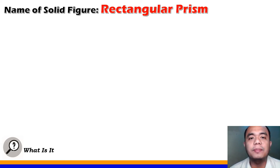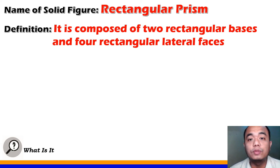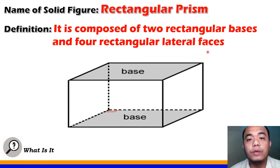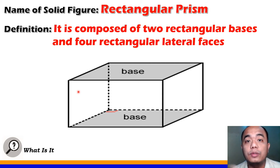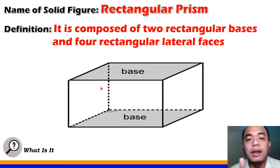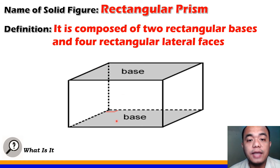We will describe each of the solid figures and start with rectangular prism. Rectangular prism is composed of two rectangular bases — located at the top and at the bottom — and four rectangular lateral faces. The word lateral denotes the side of the three-dimensional figure as opposed to the base. The sides except for the bases are called the lateral faces of the rectangular prism, and we have four lateral faces.